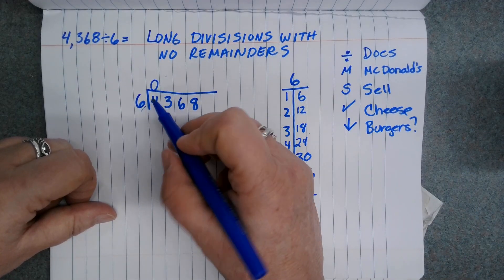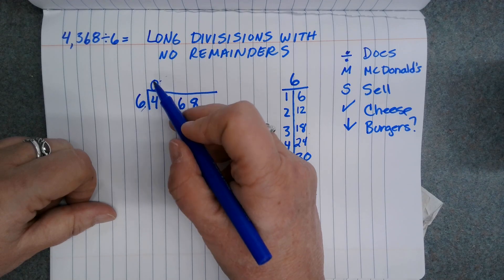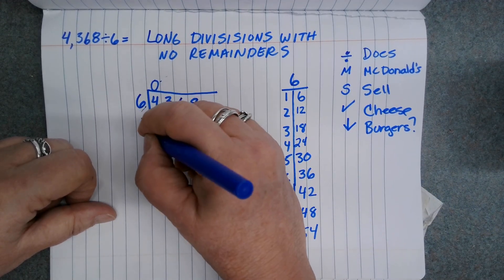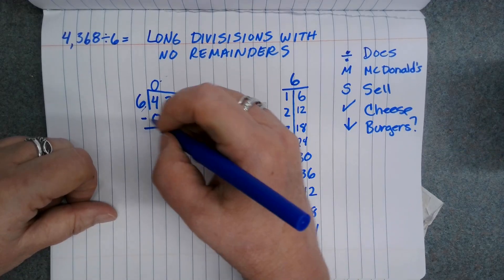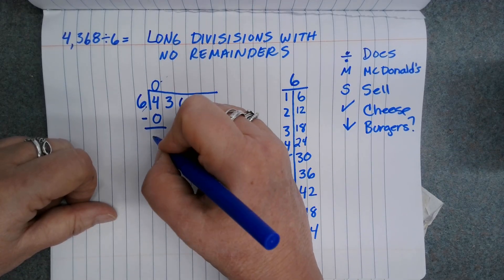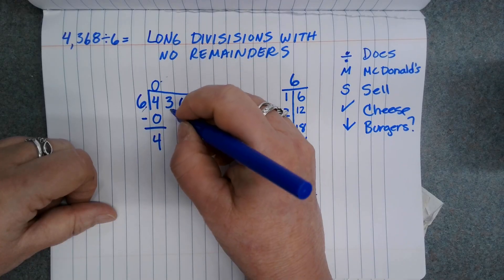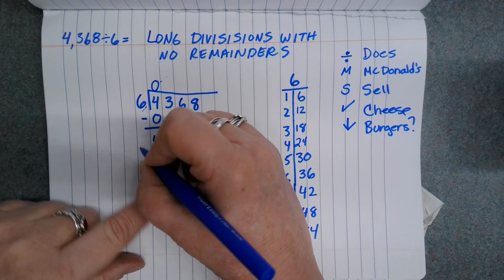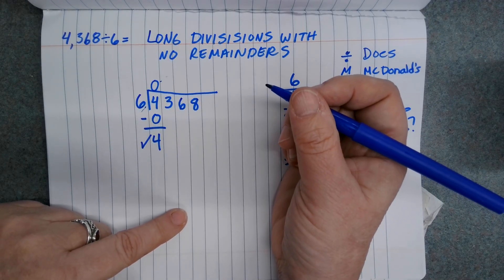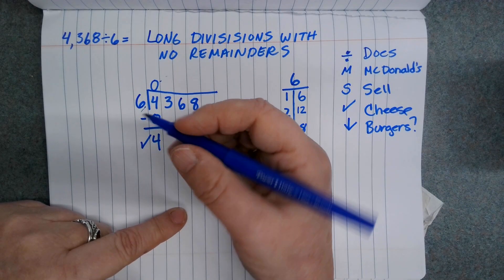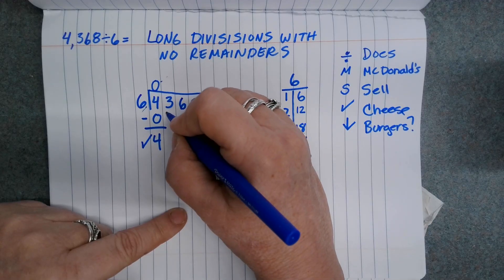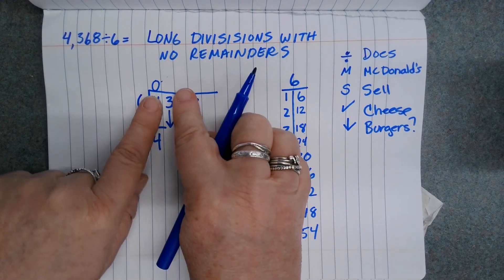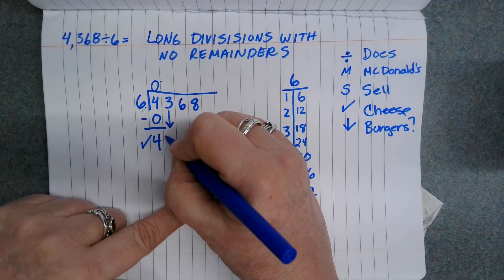That's my divide. Then I'm going to multiply. 6 times 0 is 0. Now I'm going to subtract, and I get 4. Next I'm going to check and make sure this number is less than that number. 4 is definitely less than 6. So now I'm going to bring down the next number. Now I've got 43.